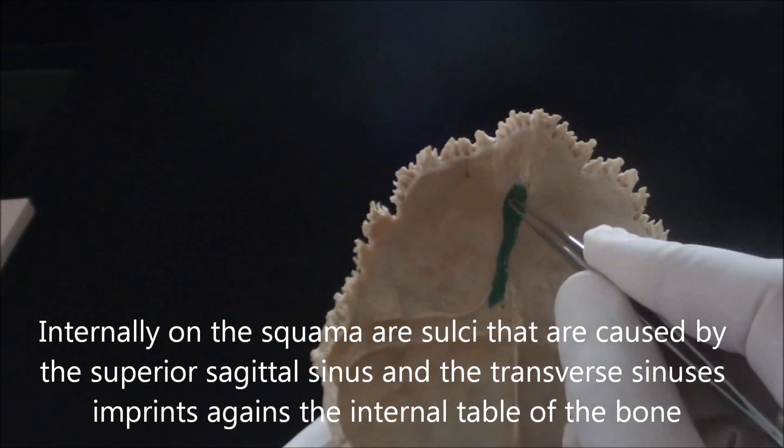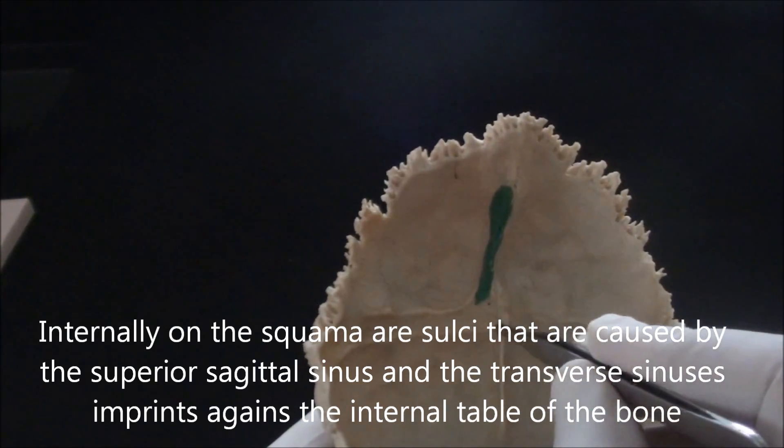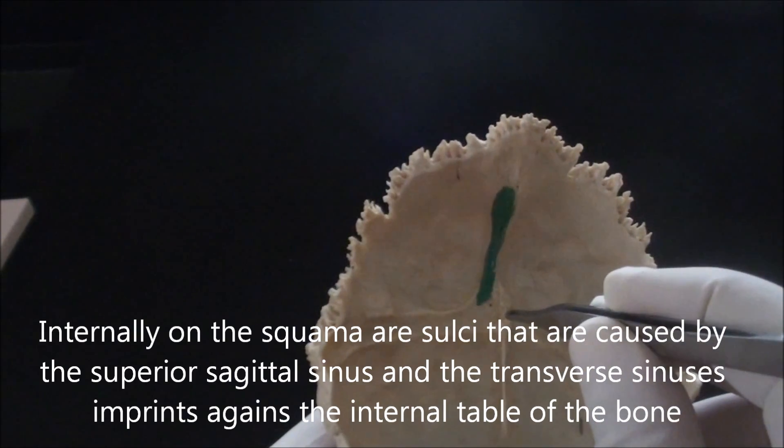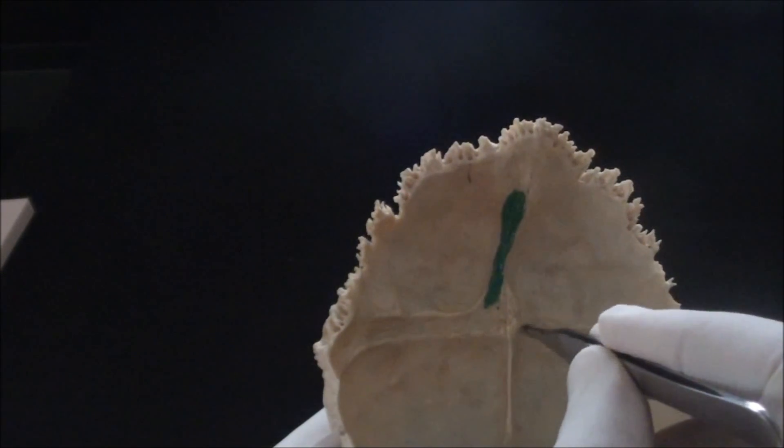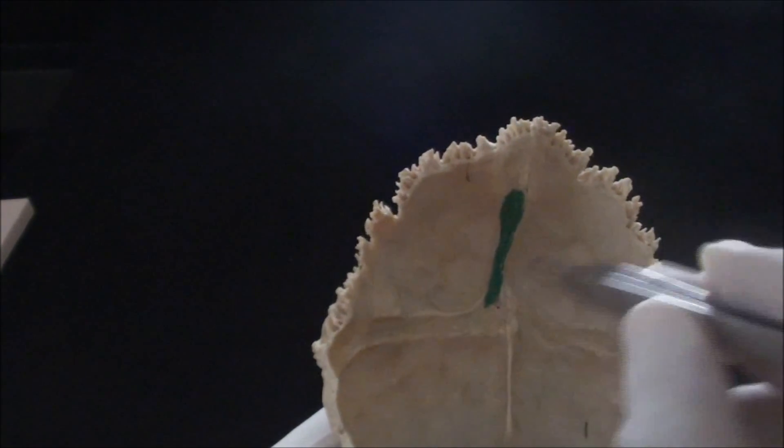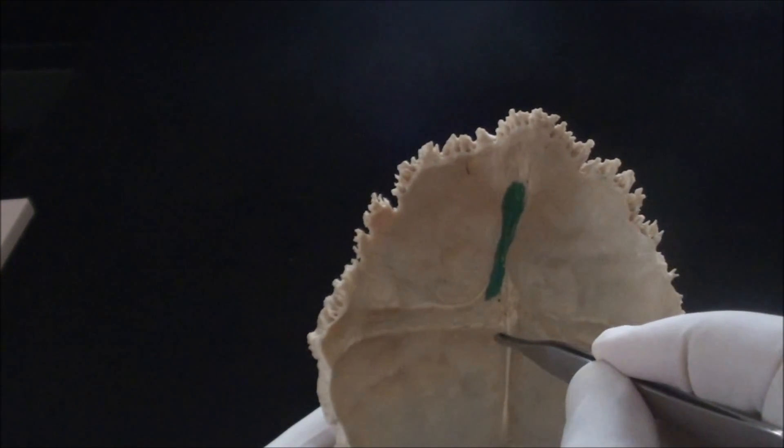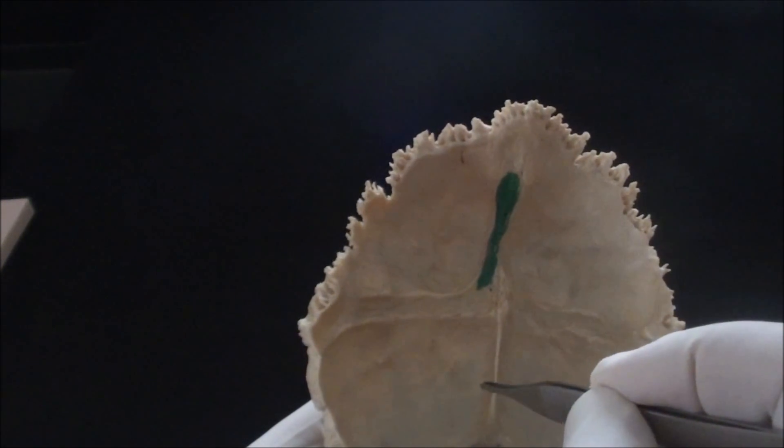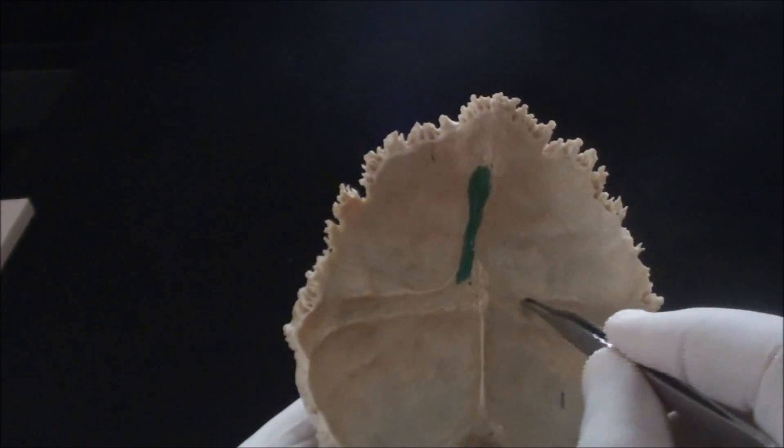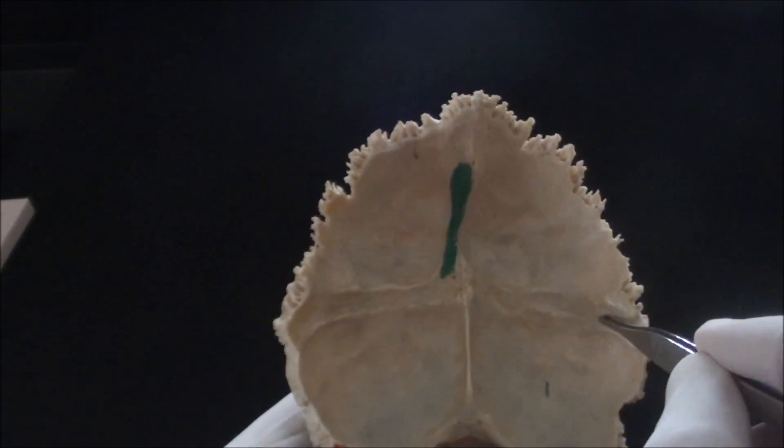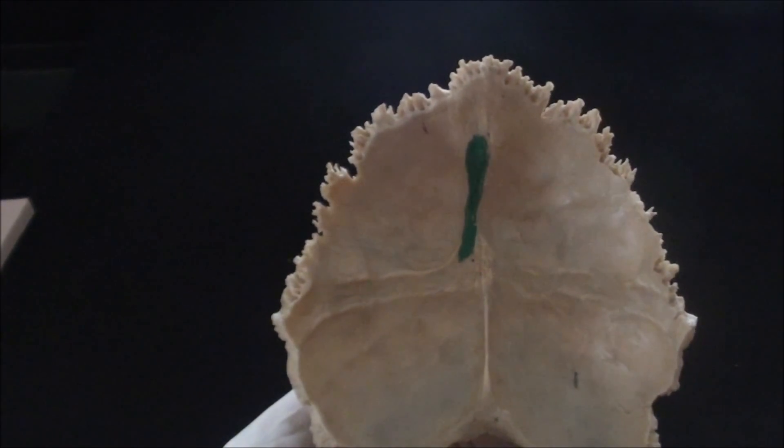This is a groove of a superior sagittal sinus, and at this point here, internal occipital protuberance, it receives even more blood through other dural sinuses. That is the reason for which it is called the confluence of sinuses. From here, blood cannot be directed through another sulcus or another groove continuing through the midline, but rather blood becomes diverted into left and right sided transverse dural sinuses, and their impression is also quite well seen here on the inner table of the occipital bone.